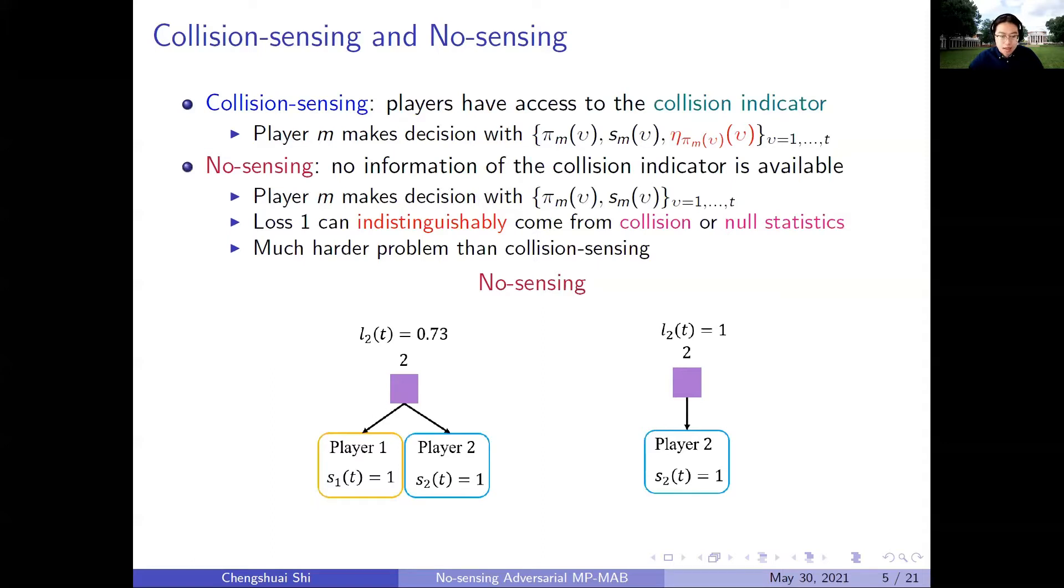And the player has no way to distinguish between these two scenarios. The figure at the bottom shows these two cases. The figure on the left shows that player 1 and player 2 suffered loss 1 from collision. The figure on the right shows that there is no collision, but player 2 directly received a loss 1 from the adversary. Without the collision information, these two scenarios are indistinguishable for player 2.